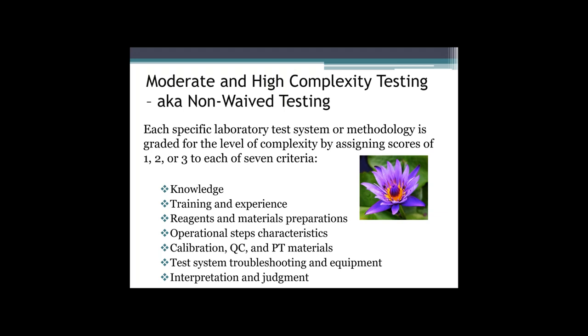Based on the sum of the scores, tests are classified as moderate, which is a score of 12 or less, or high, which is a score higher than 12. Of the test systems currently being marketed, more than one half are classified as moderate complexity, and the remaining — excluding those in the waived category — are high complexity.